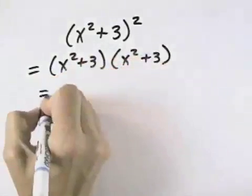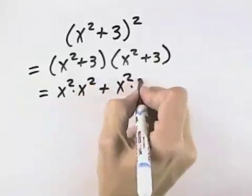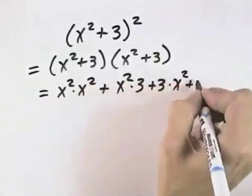So what we can do is FOIL these out to get the first terms multiplied together, plus the outer terms multiplied together, plus the inner terms multiplied together, plus the last terms.